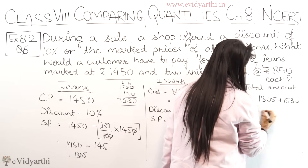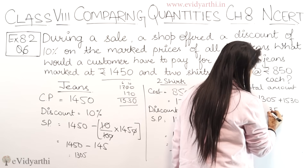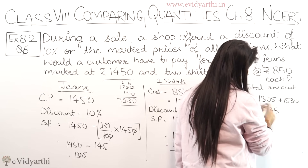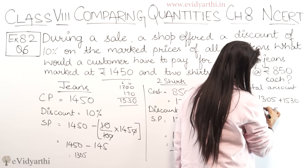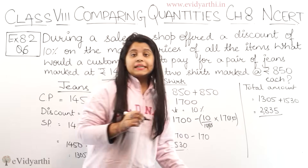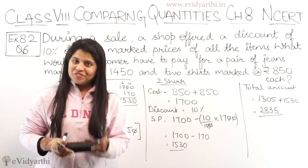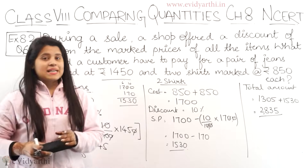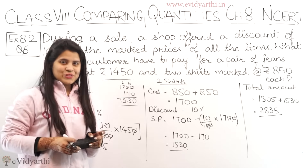So this will be: 5, 3 plus 3 is 8, and 2. The total amount is rupees 2835. So this was question number 6. Now let's come to the next question.